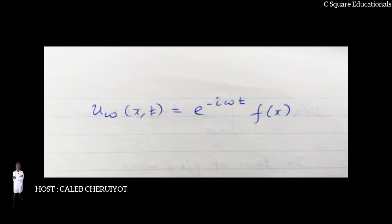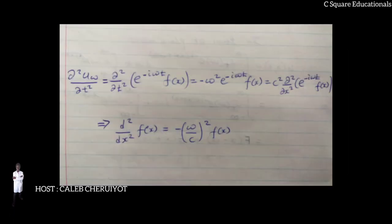This produces an ordinary differential equation for the spatial part F(x), as shown, which is precisely an eigenvalue equation for F(x), hence the name eigenmode.